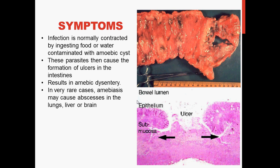In very rare cases, amoebiasis may cause abscesses in the lungs, liver, or brain. Abscesses are swollen areas within body tissue containing pus.